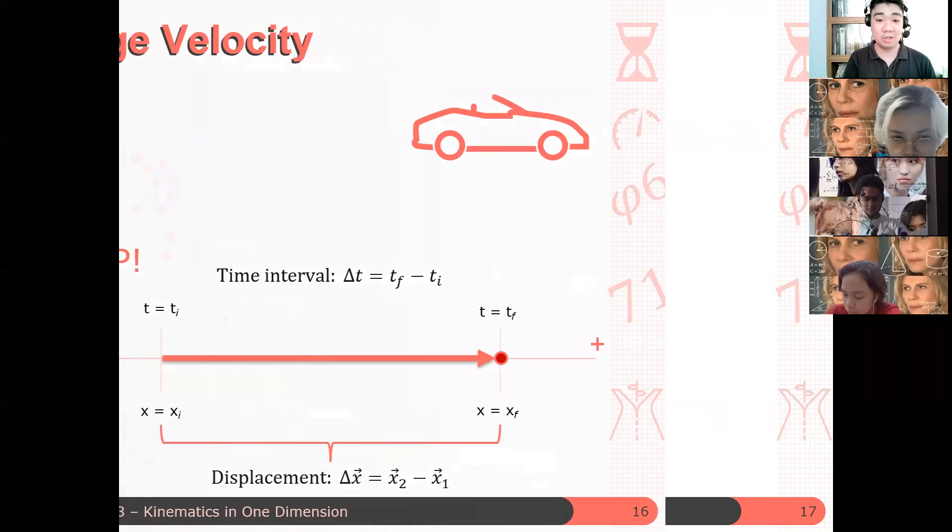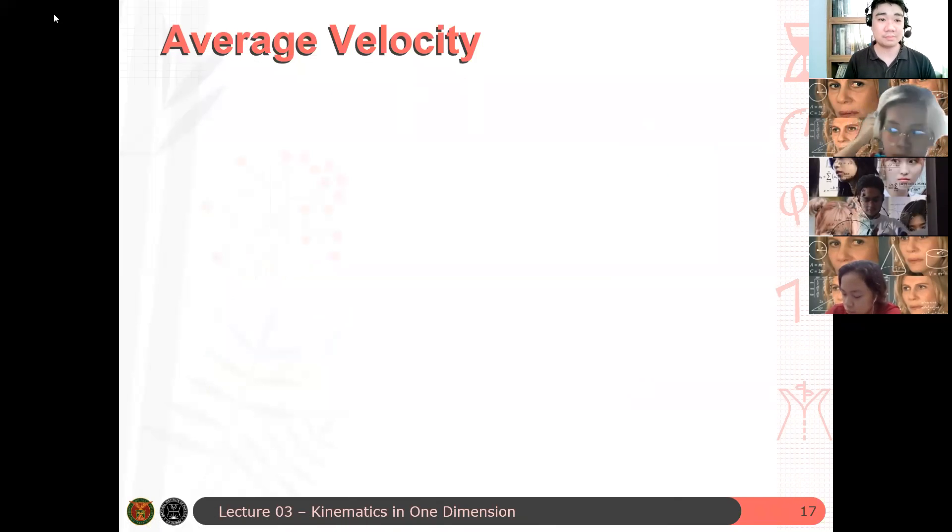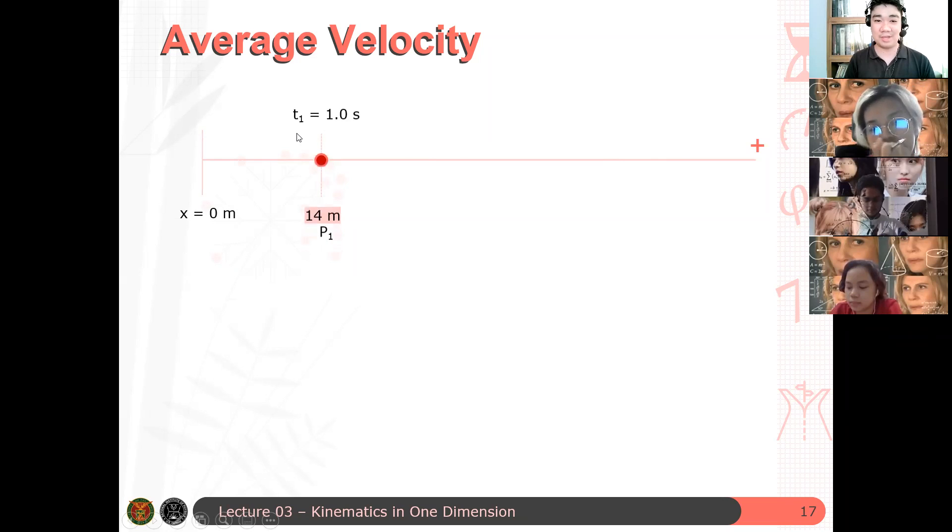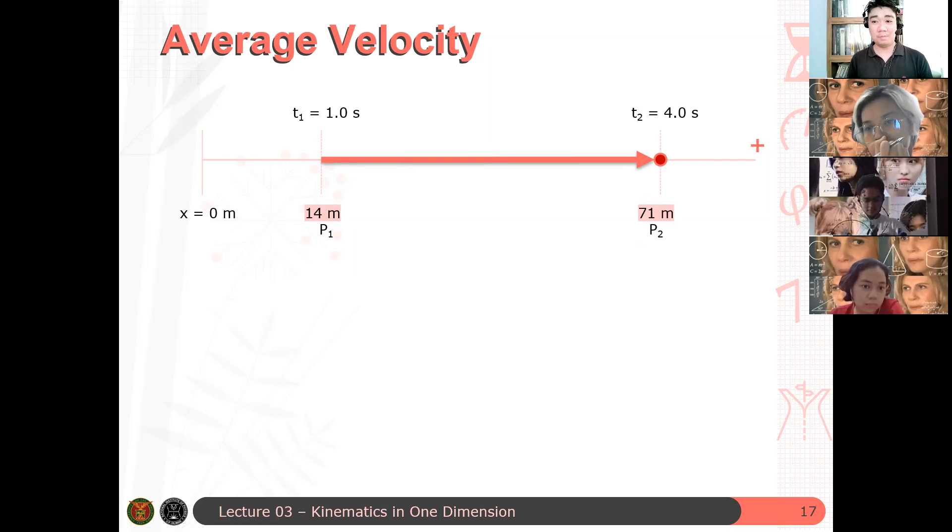That's where the average velocity comes in. So the average velocity is, again, you have this system here. You started with t1. Assuming that there are values, apparently, for the motion of the car. Assume initially that the car started at 14 meters, and the car stops at 71 meters. Okay. Or of course, that's the only part of the motion that we observed in the situation.